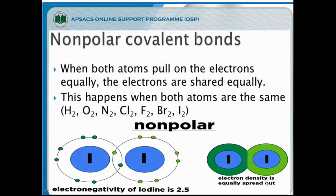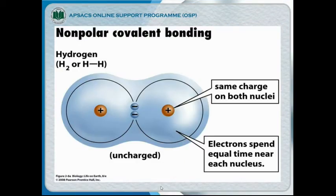The electronegativity of iodine is 2.5. Both iodine atoms have 2.5 electronegativity, so they cancel their attraction and the molecule becomes neutral. Neutral molecules are considered non-polar because there is no greater attraction from either atom. In hydrogen (H₂), the same positive charge is on both nuclei and electrons spend equal time near each nucleus, so no charge is observed.